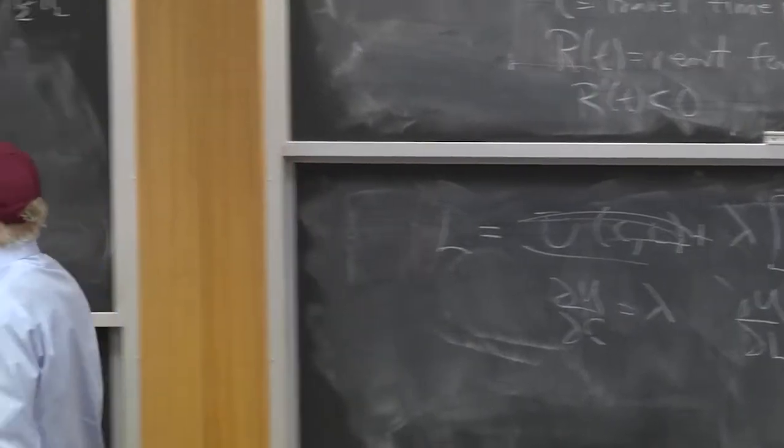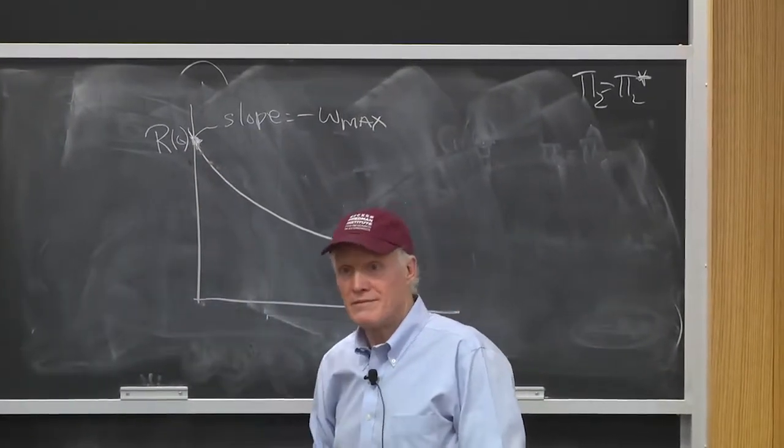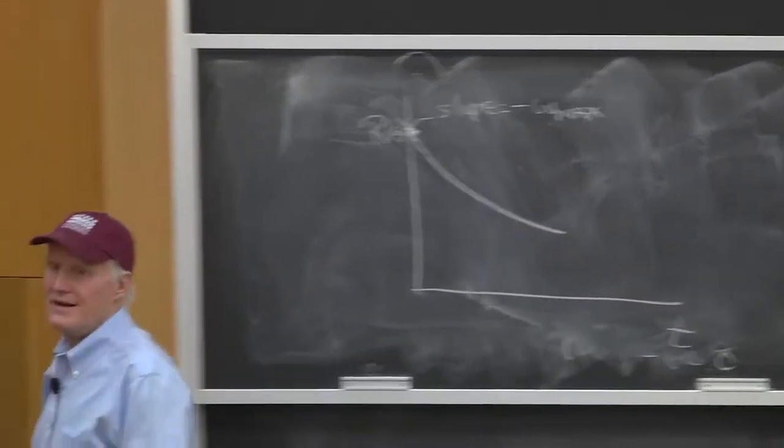R prime is the slope. R prime is the slope. Because W is not the height of that curve, it's the slope of that curve.